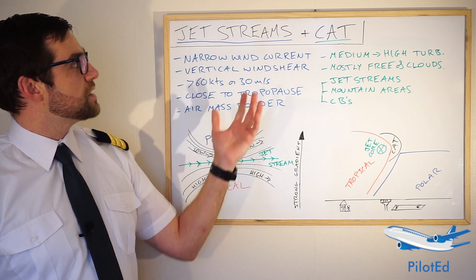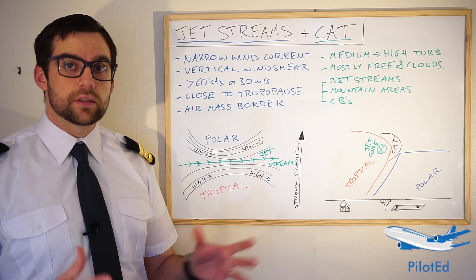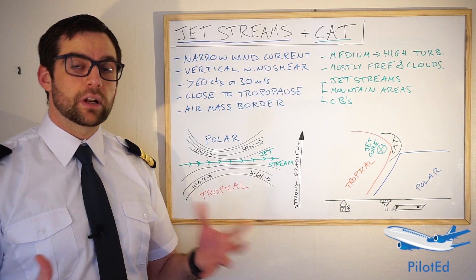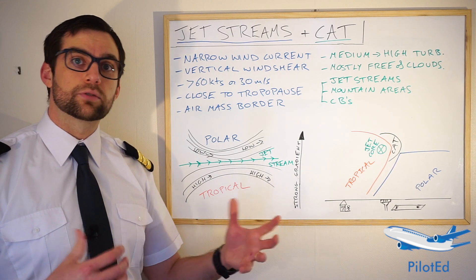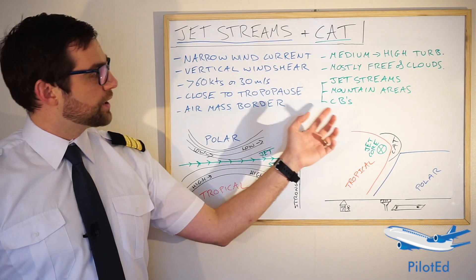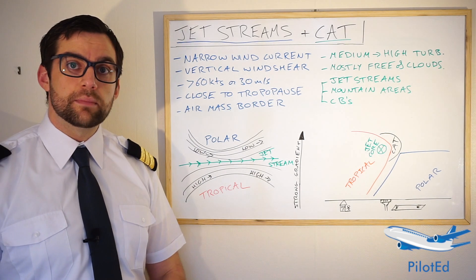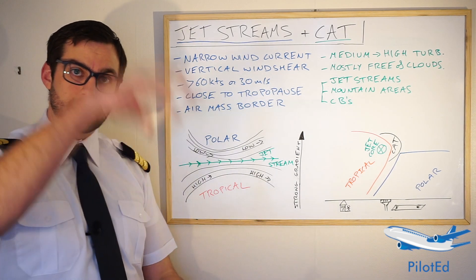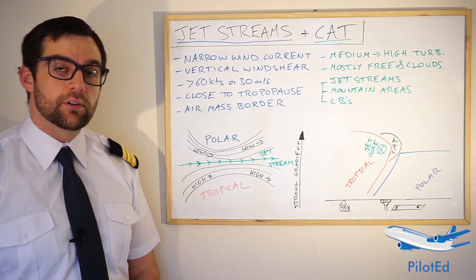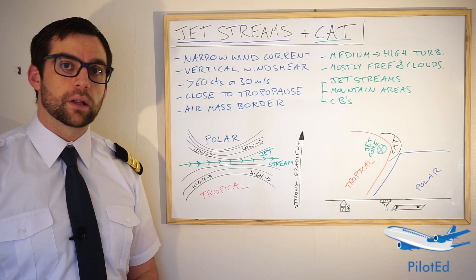Clear air turbulence, although associated with jet streams, doesn't always have to be. It is defined as medium to high turbulence, mostly free of clouds, although it can occur at high altitude with clouds — generally ice clouds, a topic for another day. Mainly it occurs close to jet streams, mountain areas, or close to cumulonimbus clouds and big towering cumulus clouds. Jet streams generally occur very close to the tropopause, just slightly below it.